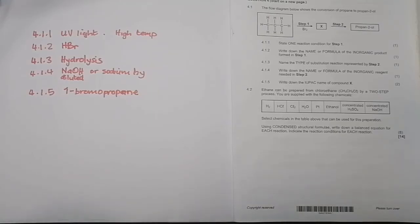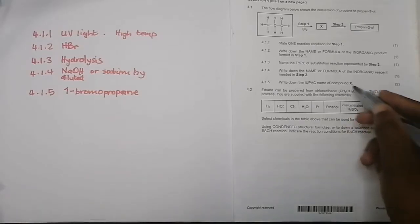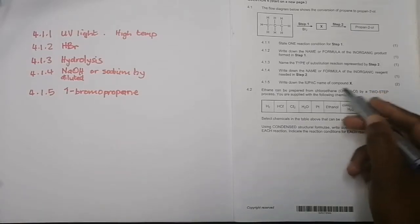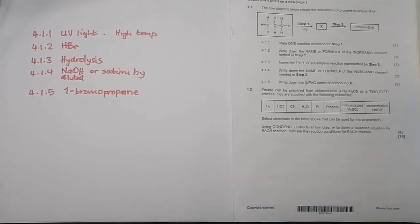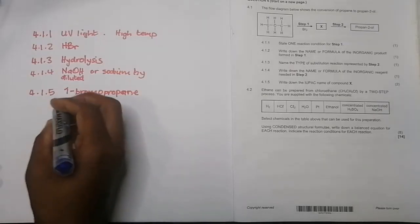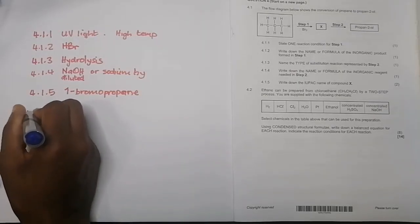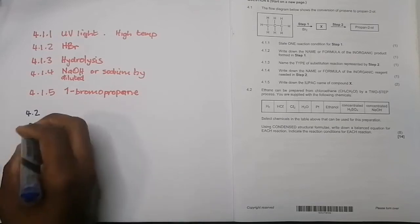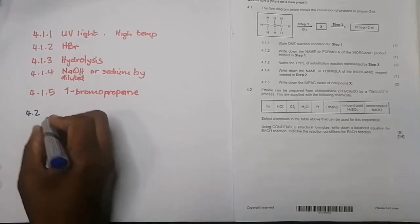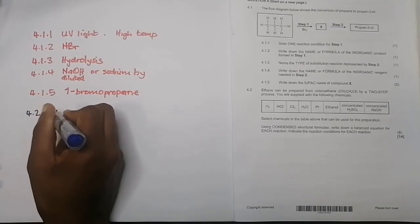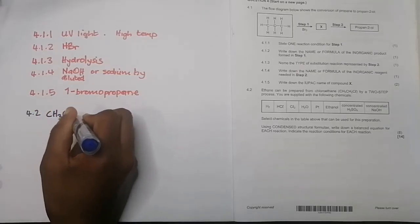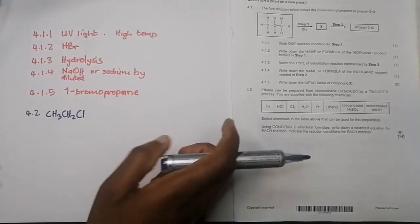Let's start with the first one. Remember we've got a haloalkane there. What you want to do is perhaps let's change it into an alkene. So what we're going to do is we take our haloalkane - I'm going to just write that with a different color.